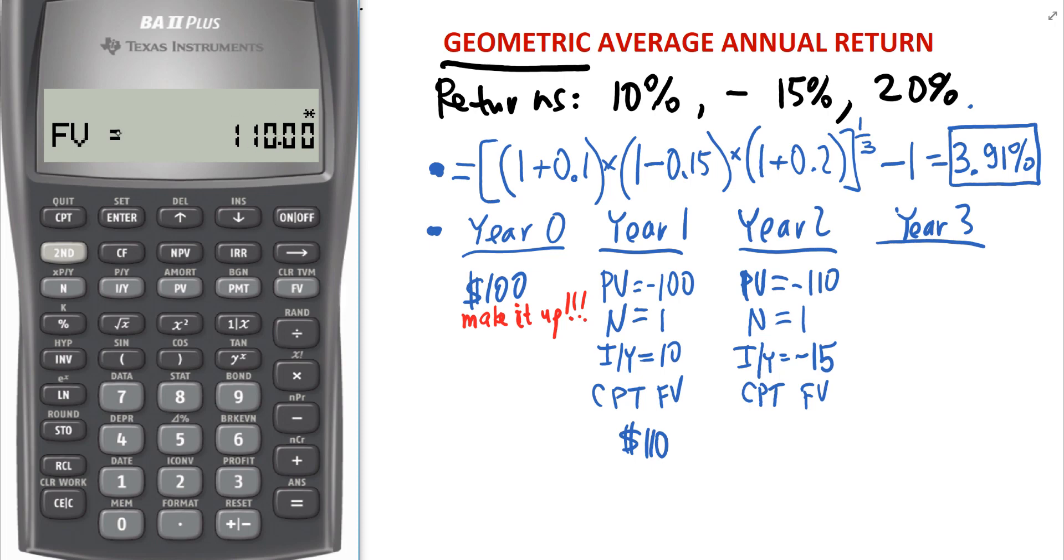Financial calculator again. We can actually leave the answer on the display, change the sign of it to negative, and then save it as PV. So now we are beginning the year 2 calculation. N equals 1. So I press 1 N. 15 negative, right?